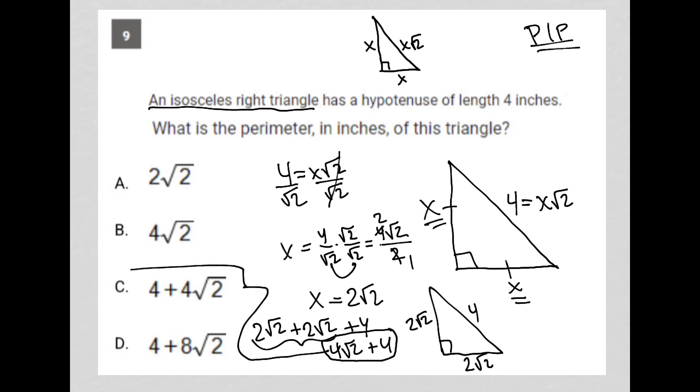And therefore, choice C, although they have it in a different order, right? They have the 4 first and then the 4 root 2. That's perfectly fine. Choice C is the correct answer here.